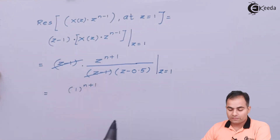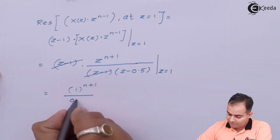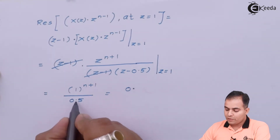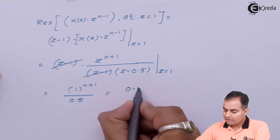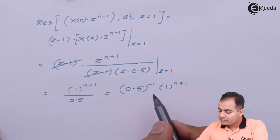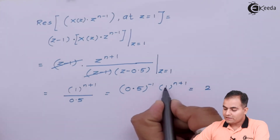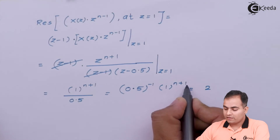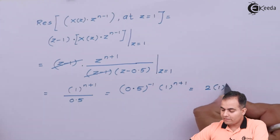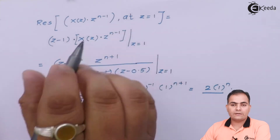Substituting Z = 1: the numerator gives 1^(n+1) and the denominator gives 1 − 0.5 = 0.5. Moving 0.5 to the numerator gives 0.5⁻¹ = 2, and 1^(n+1) = 1^n. So the residue of X(Z)·Z^(n−1) at Z = 1 is 2·(1)^n.